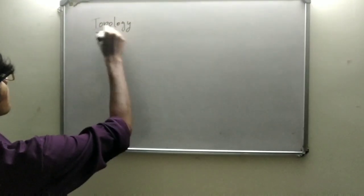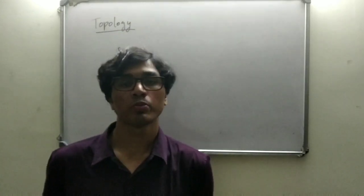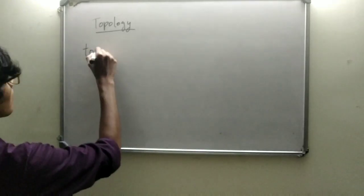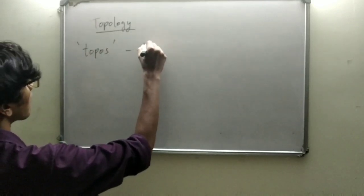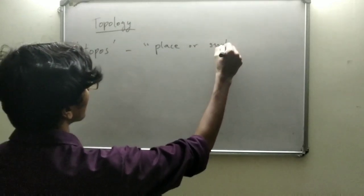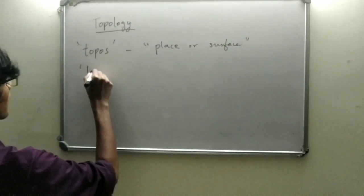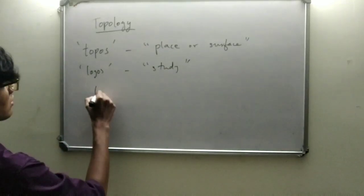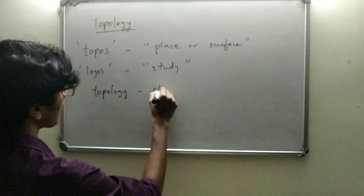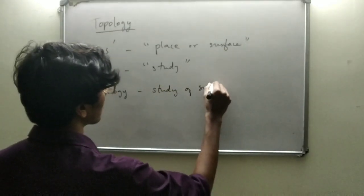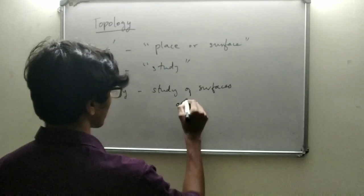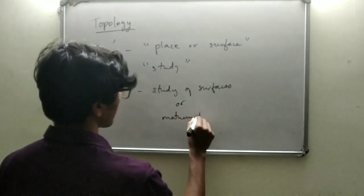So, topology. The word topology is derived from two Greek words, namely topos and logos. Topos means place or surface, logos means study. So the word topology literally means study of surfaces, and in the wider sense it's all about a study of mathematical spaces.